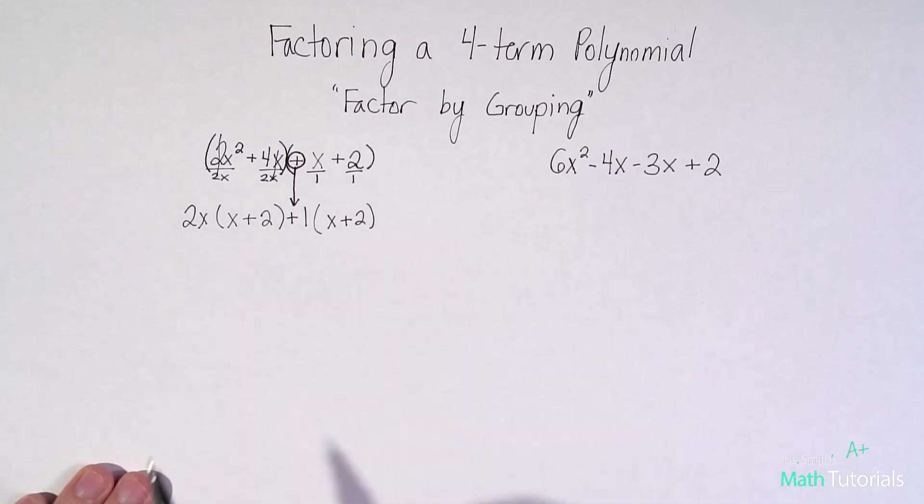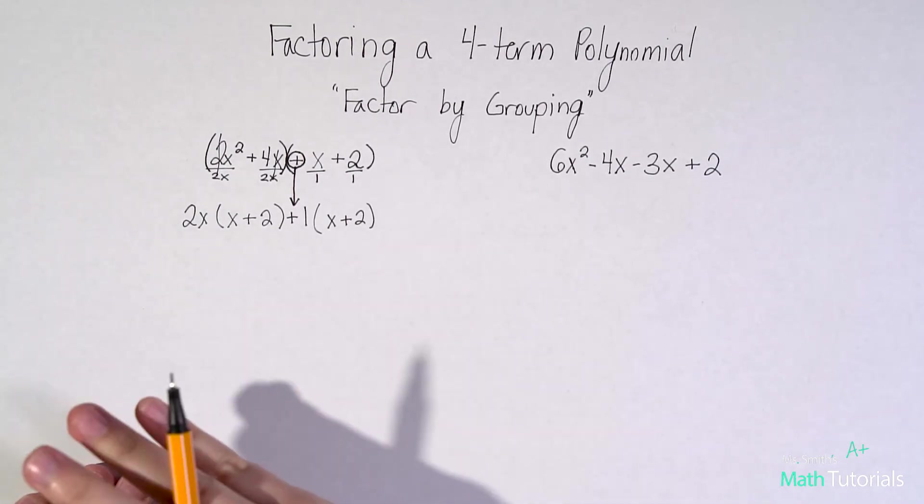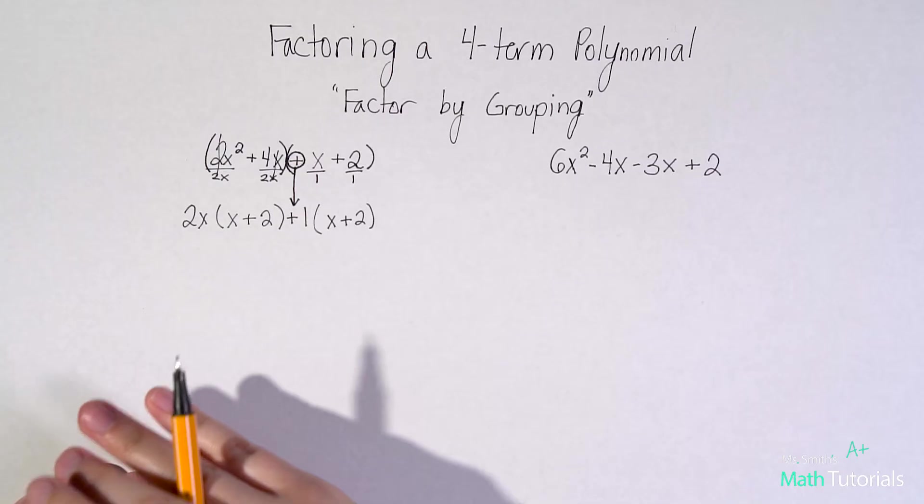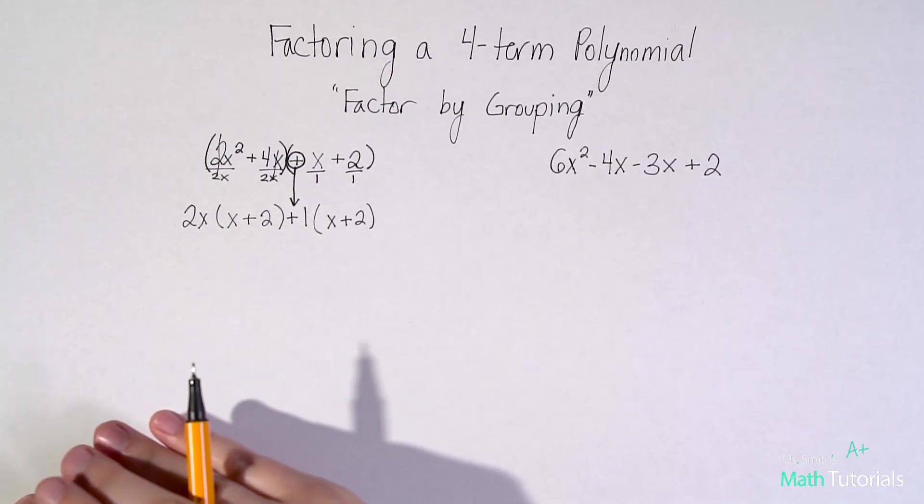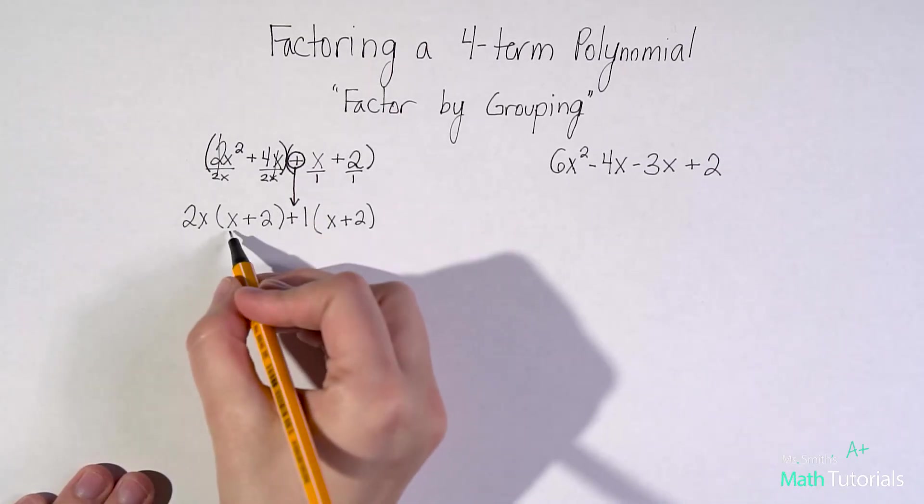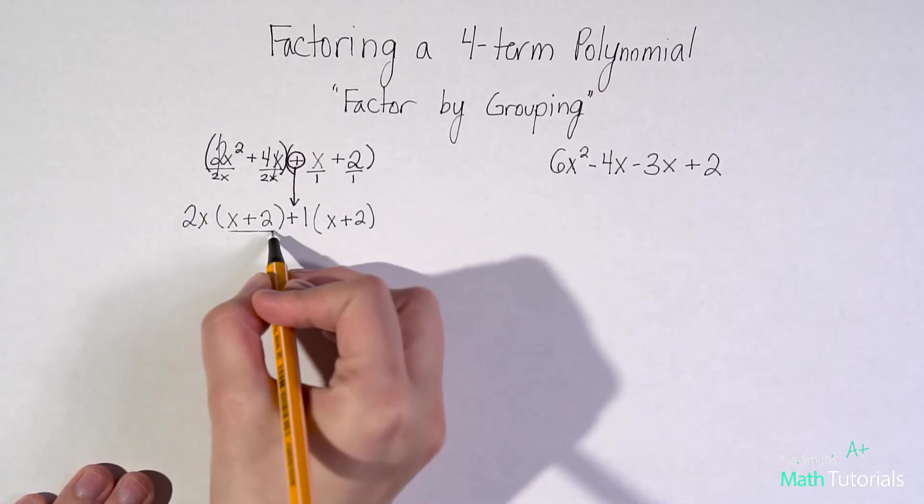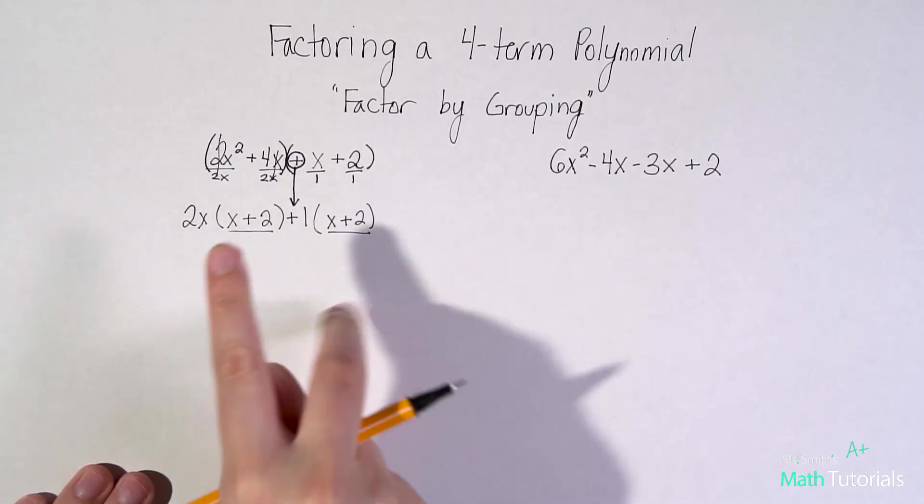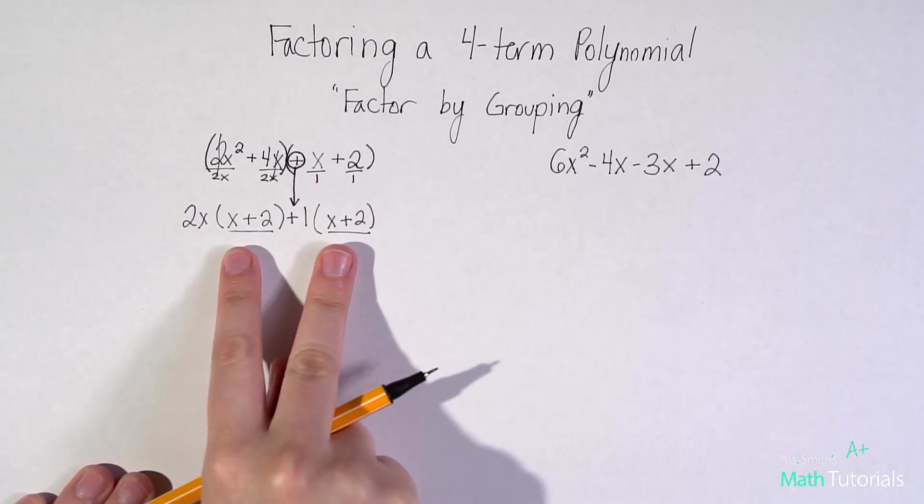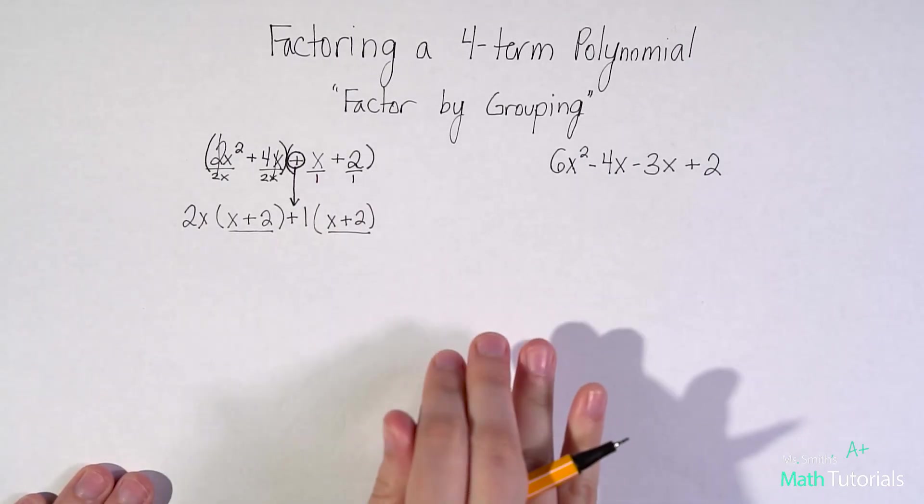So at this point, I love factor by grouping because you can check yourself. If you have done your work totally correct, you should have a twin. You should have a set of twins, I should say, right here and right here. These two should be exactly the same. And if they are, you know you've done everything right.